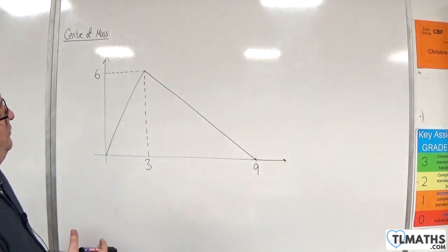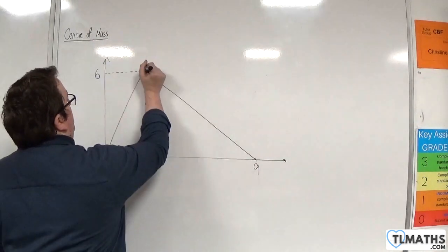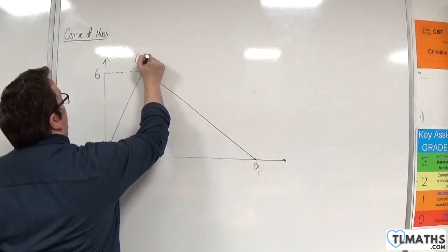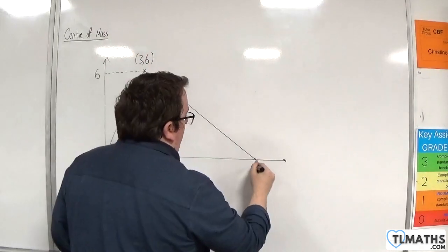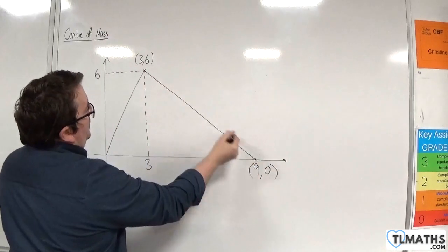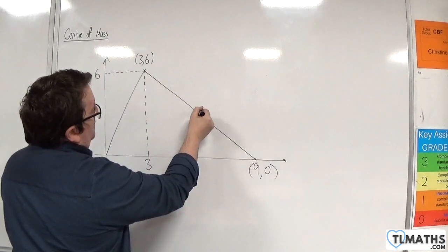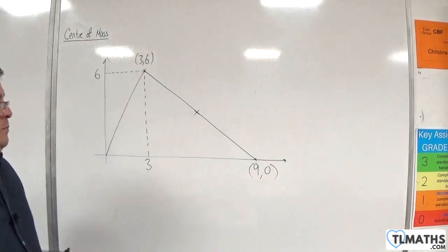So what I'll do is I'll think about this point being 3, 6. This point is 9, 0. So I'll find the center, the midpoint rather, of those two points.